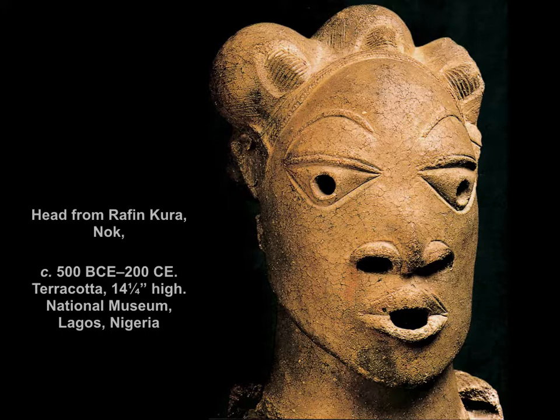Historians believe these terracotta sculptures are the earliest examples of figurative sculpture found south of the Sahara Desert. Subjects for these sculptures include both people and animals, and the heads of the human figures are significantly larger in proportion to the parts of the body.